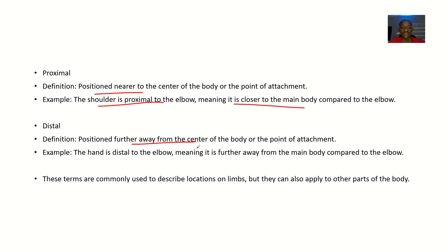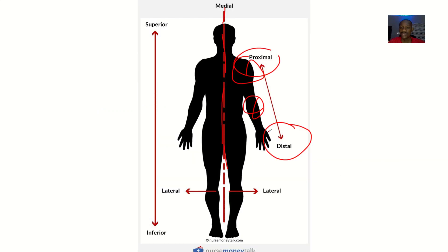So distal is further away from the center of the body or the point of attachment. Example is what? The hand is distal to the elbow, meaning the hand is far away from the body than the elbow. The hand here, it's more far away from the body than the elbow joint.